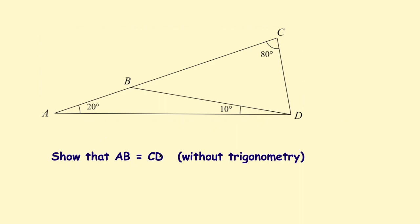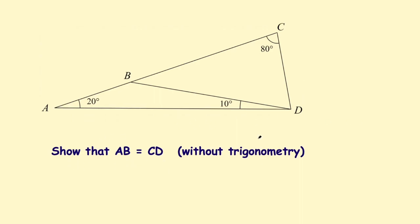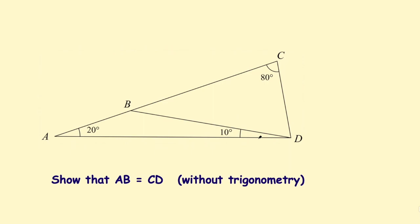We need to show that AB equals CD. So as I said the first step is to figure out all of the rest of the angles in this picture. Because this is 20 looking at this large triangle ACD, this is 20, this is 80, that means this remaining angle needs to be 80 degrees because angles in a triangle add up to 180 degrees.